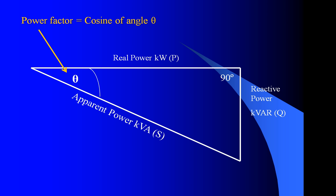If we look at the resulting power triangle, we find an important part — the power factor — which is the cosine of this angle. The power factor can also be shown as the cosine of the angle, the real power over the apparent power, P over S, which is sometimes seen as kilowatts over kVA, or in circuits R over Z.